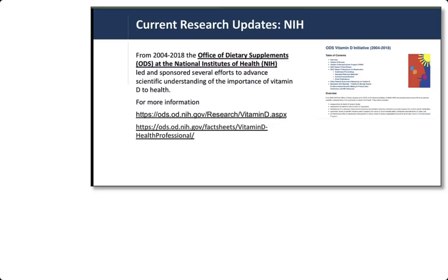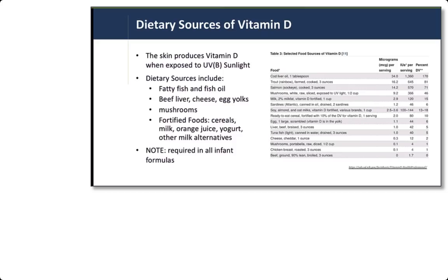Here I'm providing a direct link to the current research and to the health professionals fact sheet on vitamin D. Regarding dietary sources: skin produces vitamin D when exposed to UVB sunlight — about 10 to 30 minutes of sun exposure is usually adequate for most individuals. Dietary sources include fatty fish and fish oils, beef liver, certain types of cheese, egg yolks, and mushrooms. In the United States, fortified foods such as cereals, milk, certain orange juices, and milk alternatives often have vitamin D added.